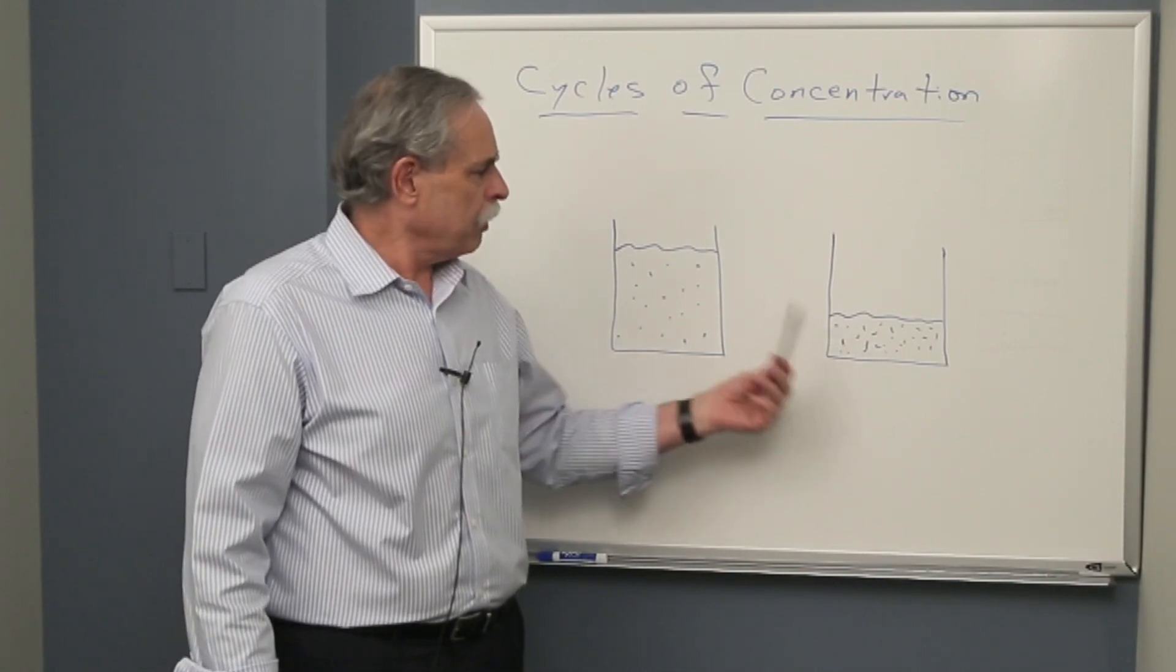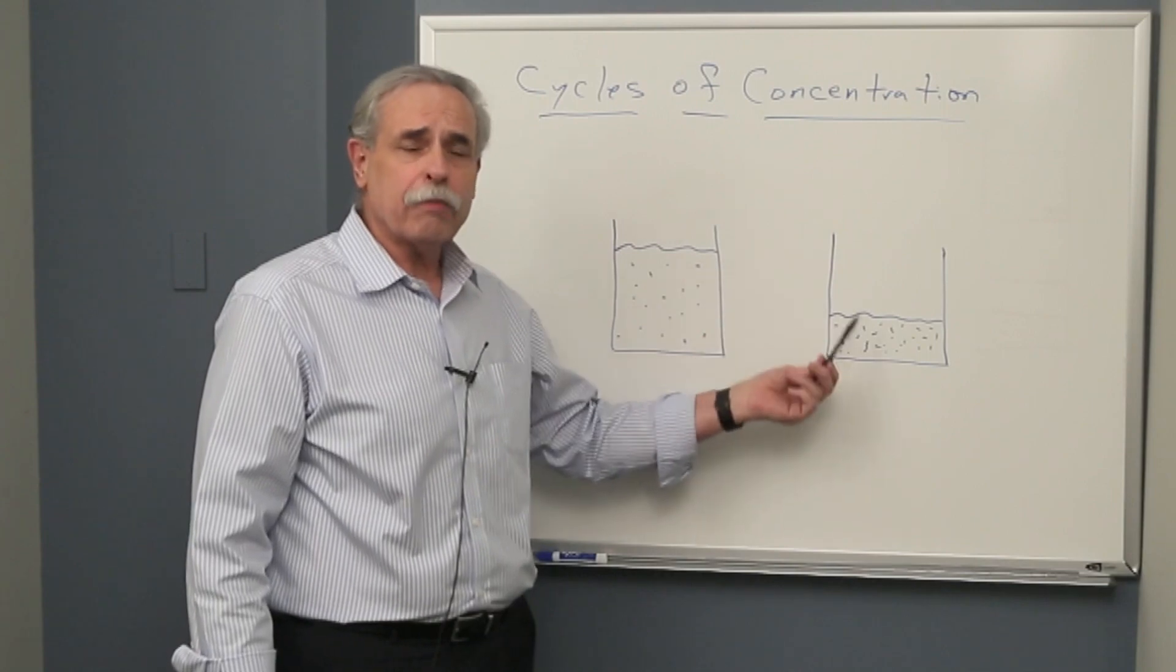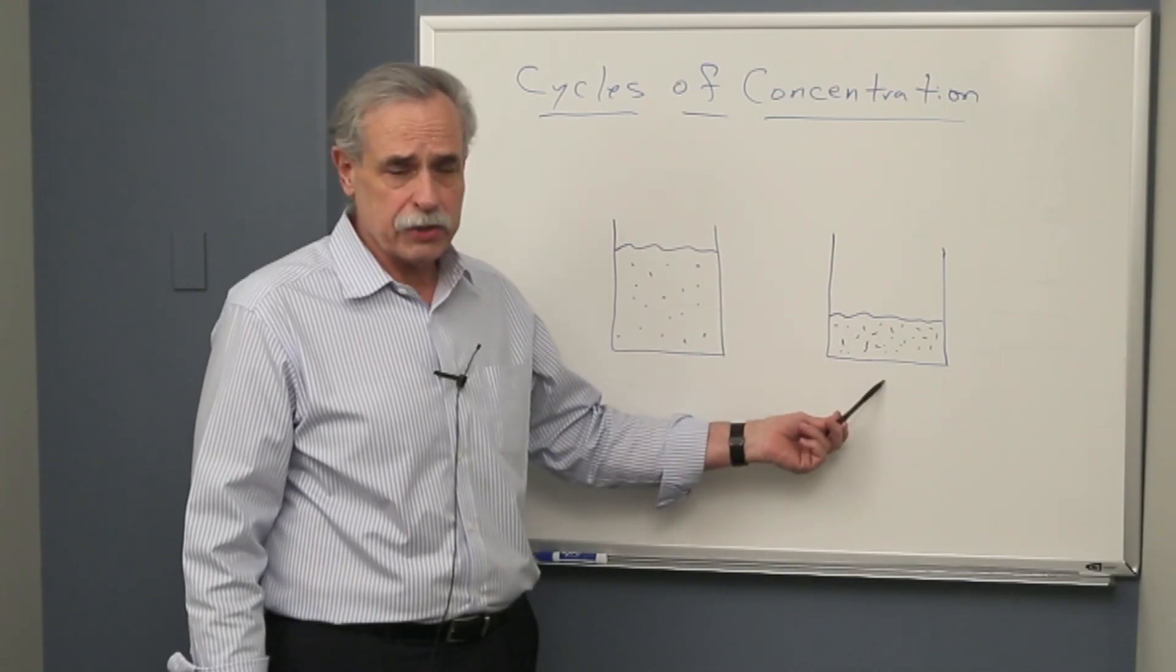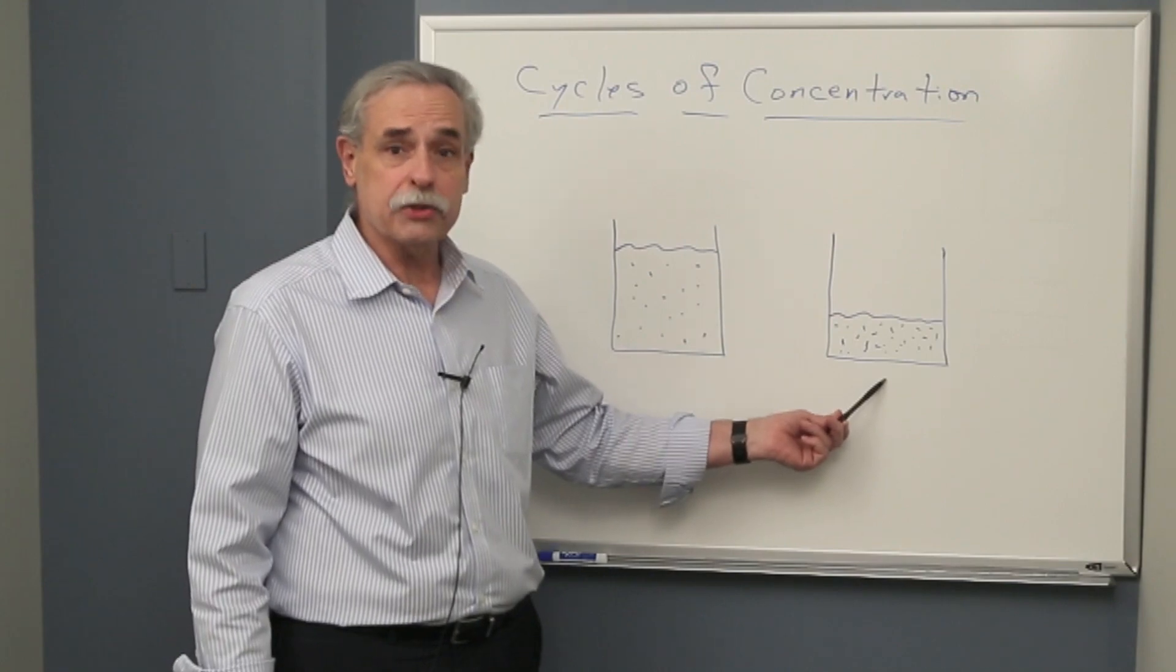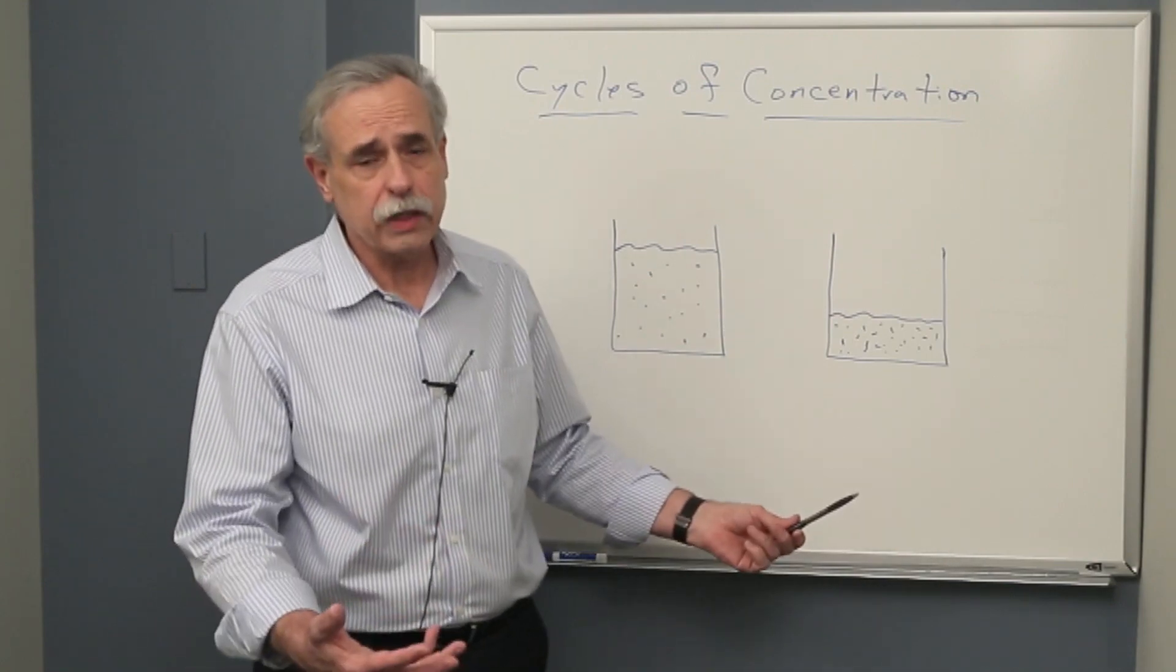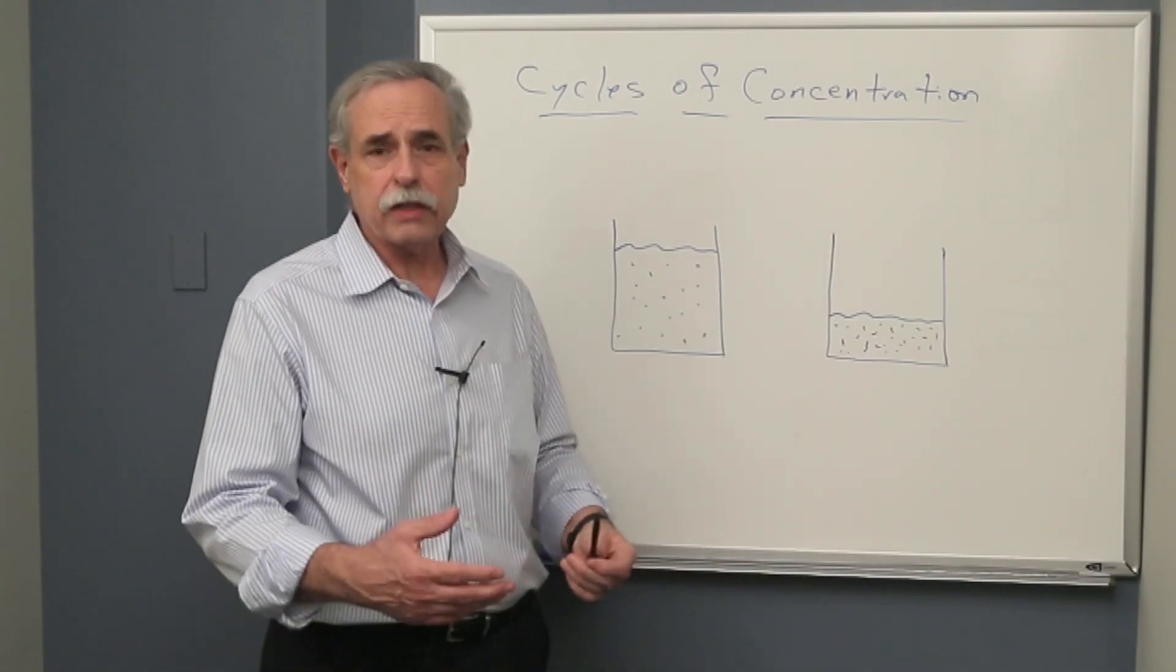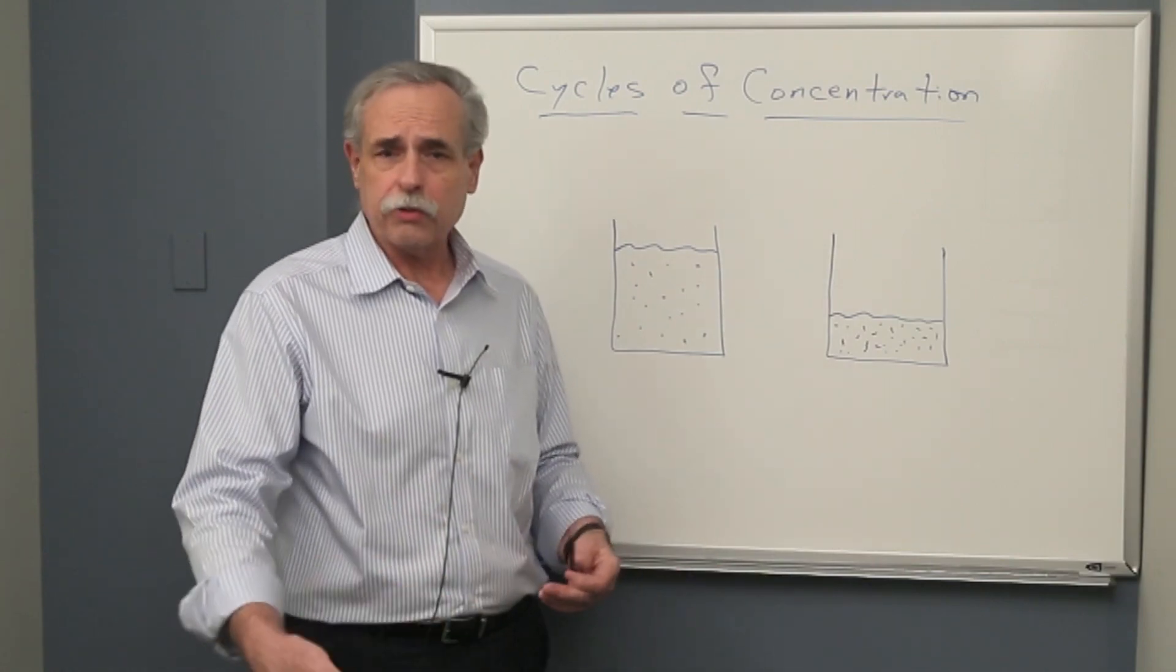So, for example, if you took the volume of water and evaporated half of it down, the concentration of solids that remains in the half of the volume is twice. So you have a cycle of concentration. Continuing evaporation beyond that, the cycles of concentration increased to two, three, and so on.